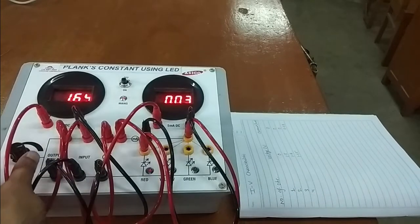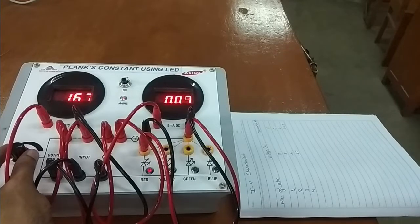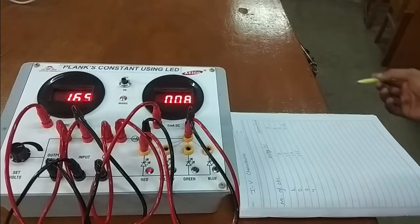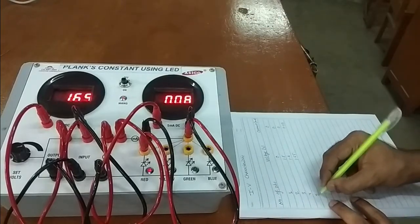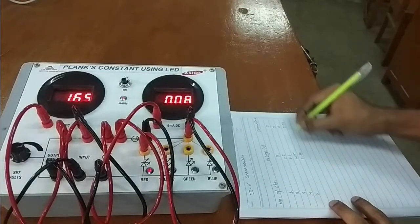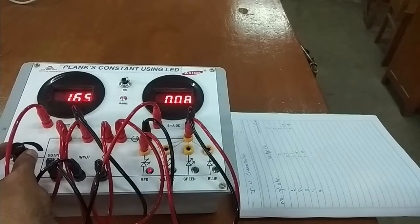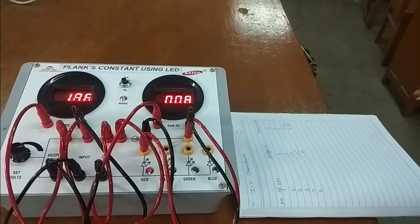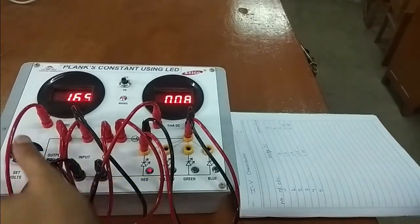Make it 1.7. Voltage is 1.7, observation number 5, 1.7, current is 0.08 and at this location you will be able to see that red LED is glowing. We are approaching the knee voltage. Let's make it further.